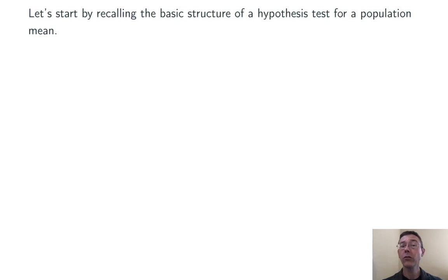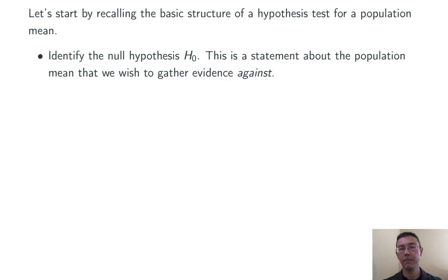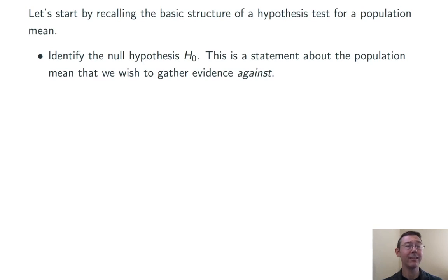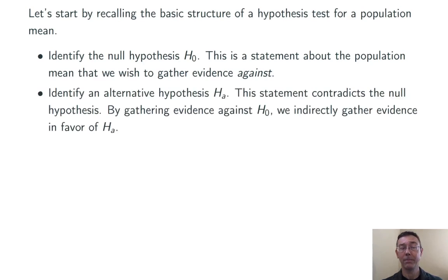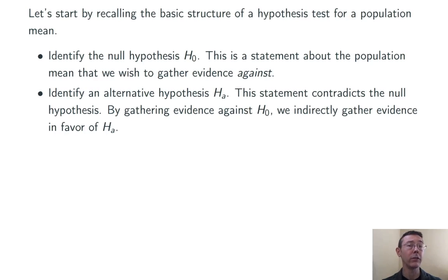Let's start by recalling the basic structure of a hypothesis test for the mean. First, we identify a null hypothesis, H0. This is a statement about the population mean, and it's typically the thing we want to get evidence against. Next, we identify an alternative hypothesis, H sub A. This statement contradicts the null hypothesis, and usually it's the thing we actually want to establish.